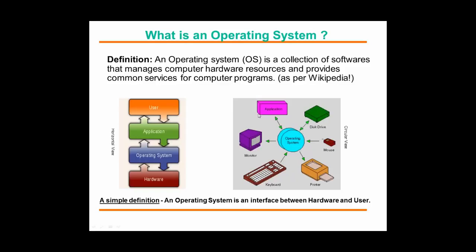There are two diagrams listed here: one is a horizontal view of the operating system, and another is a circular view. In the circular view, the operating system is in the middle, surrounded by various hardware components. At the bottom you have hardware, the operating system sits on top of hardware, and on top of the operating system you have an application or a user.